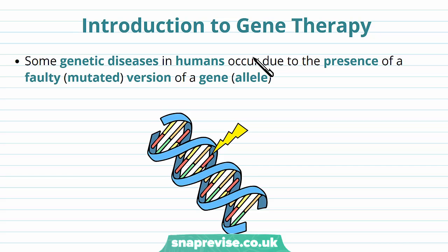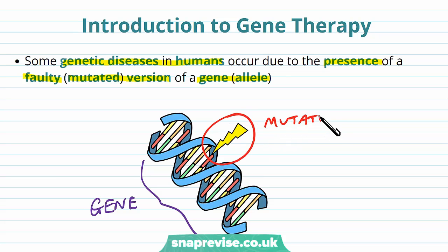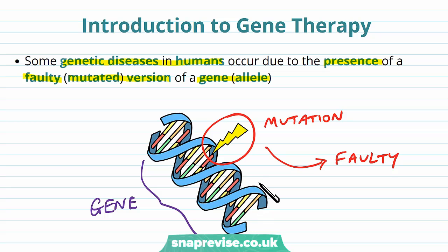Some of the genetic diseases that happen in humans occur because of the presence of a faulty or mutated version of a gene or allele. Every protein in the body is coded for by a gene, and that gene has to have the correct sequence of DNA bases to code for the correct protein. Sometimes we can have mistakes in that sequence caused by a mutation — a change to that sequence of bases — which usually leads to a faulty allele and therefore a faulty protein, and that can cause genetic diseases.